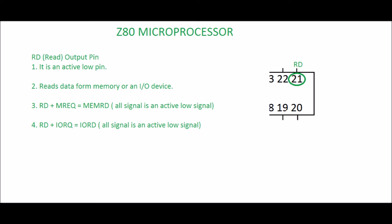Pin 21: RD, Read. It is an output pin and an active low pin. It reads data from memory or an I/O device — when this pin is in active low state, it indicates that the microprocessor is ready to read data. RD + MREQ = MEMRD: when the read signal is combined with memory request, it is used for memory read. RD + IORQ = IORD: when the read signal is combined with I/O request, it is used to read from an I/O device. All signals are active low.